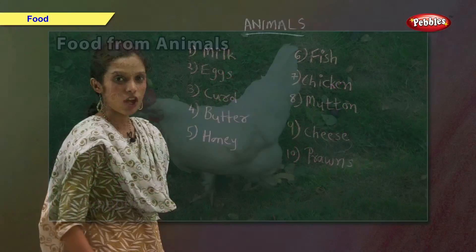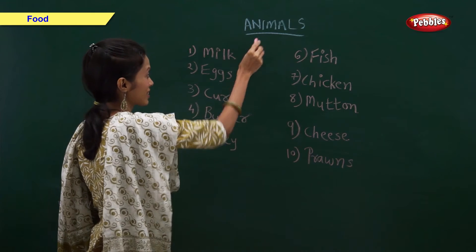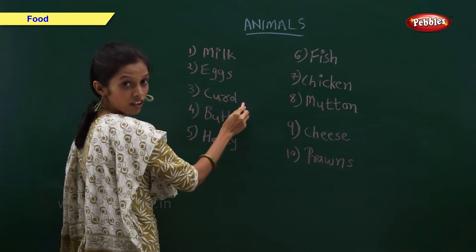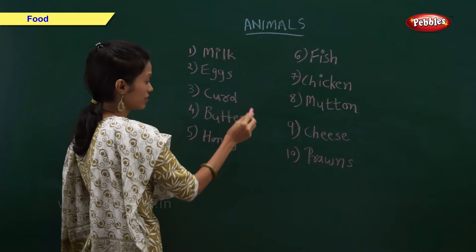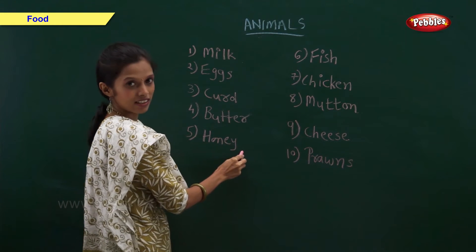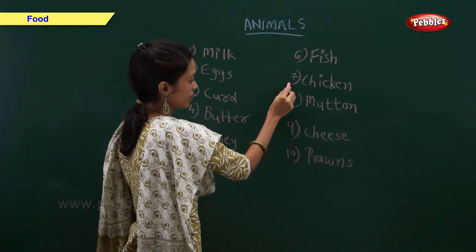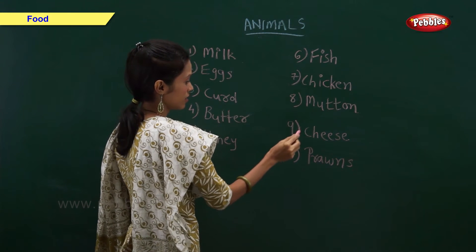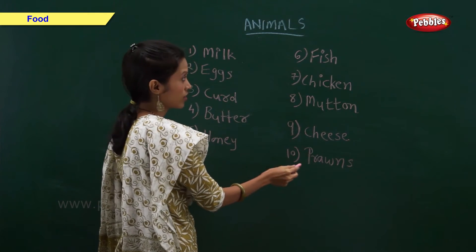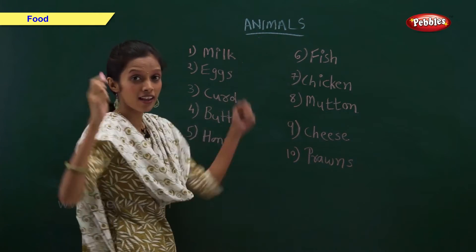We also get food from animals. We get milk, eggs, curd, butter, honey, fish, chicken, mutton, cheese and prawns. All this food is very healthy.